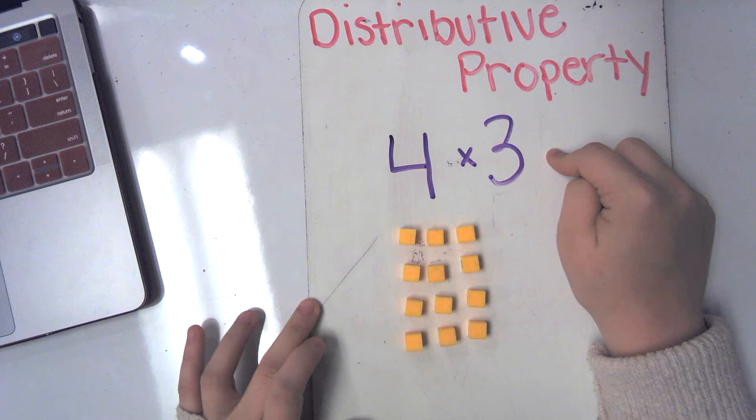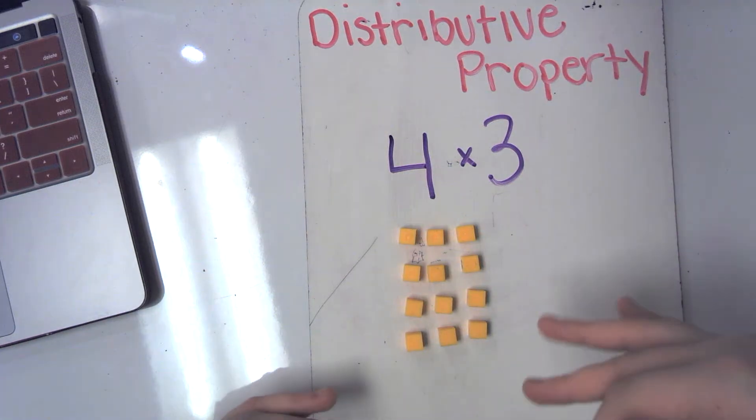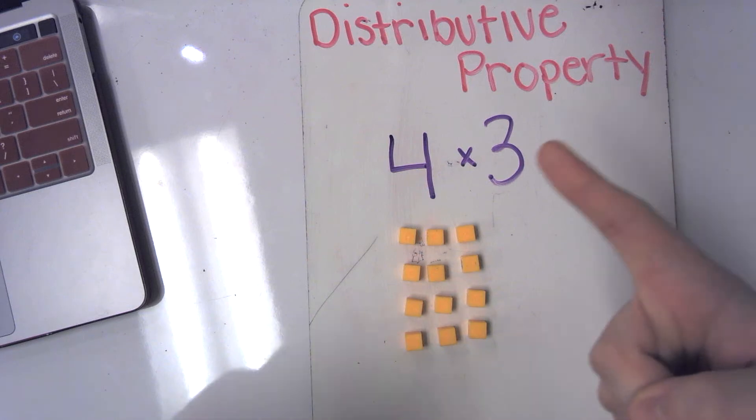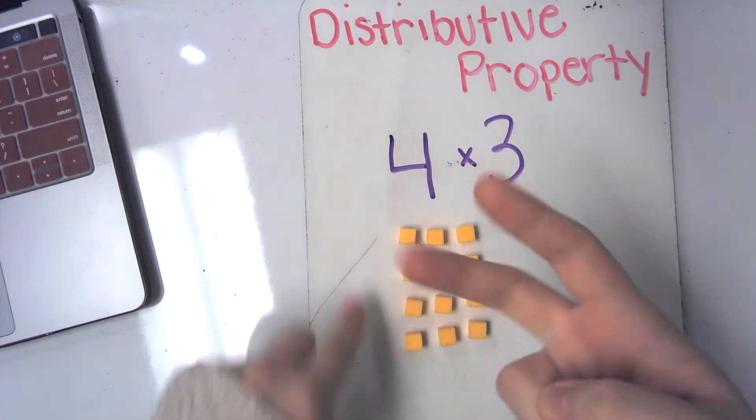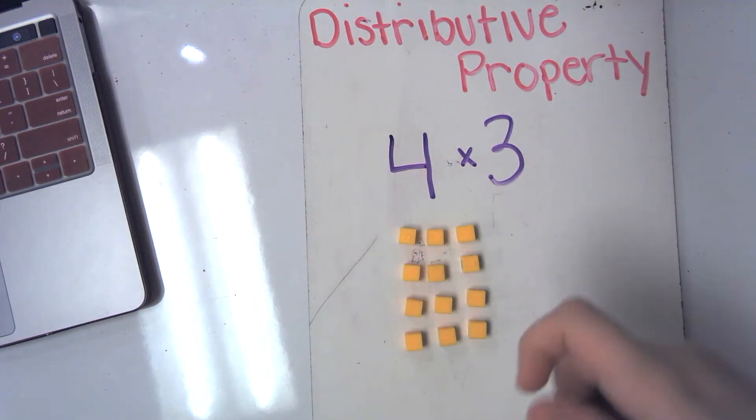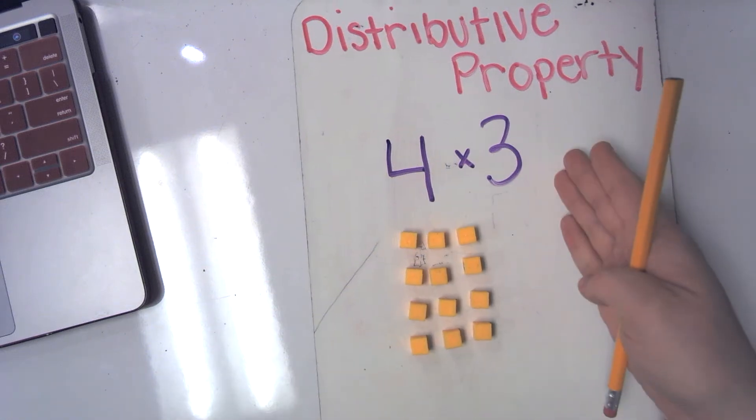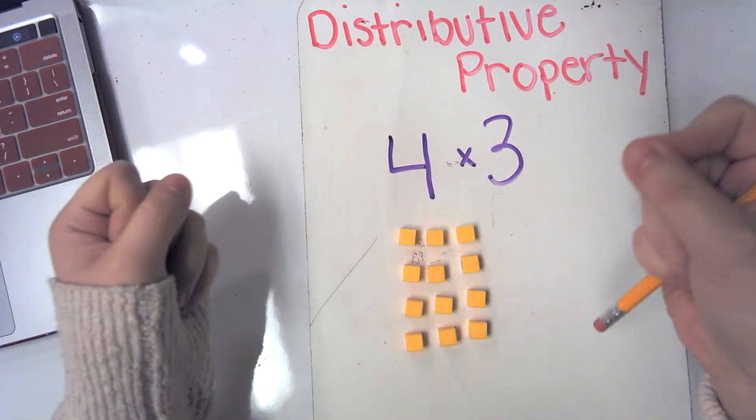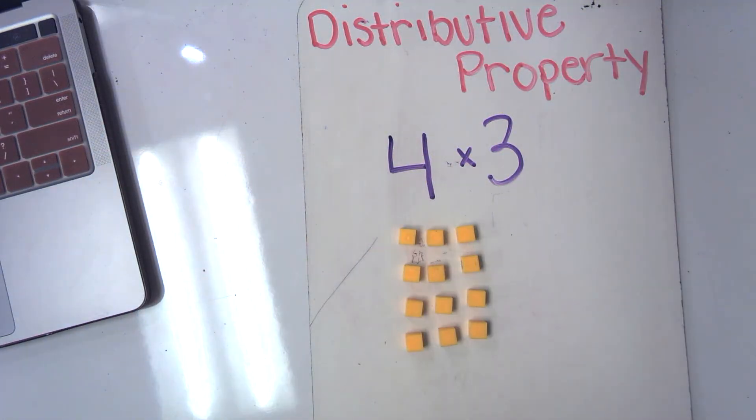The distributive property teaches us that anytime we get a difficult multiplication fact, we can break it apart into two smaller facts. What we've done this week is really thought about that in terms of using an array. So my first problem, here's a problem here. Let's do an example together. Four times three. Now in third grade so far, we've really mastered our zeros facts, our ones and our twos. We're working on our threes, but fours are still kind of tricky for us. So we might say to ourselves, four times three, that's too tricky. Let me break it down into two smaller facts.